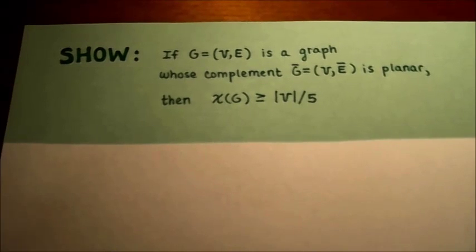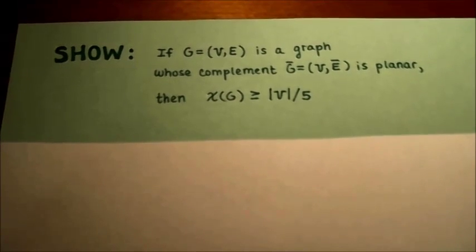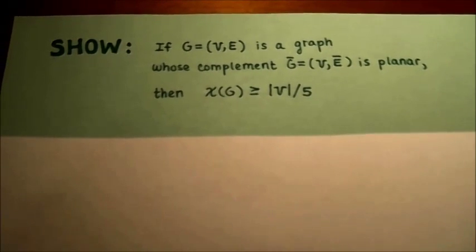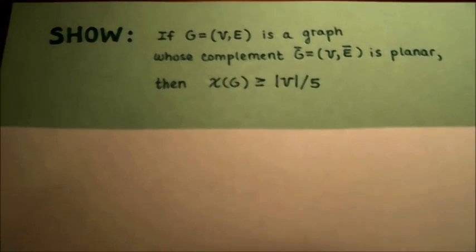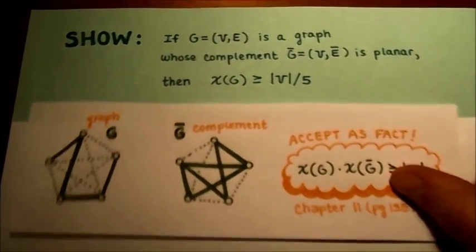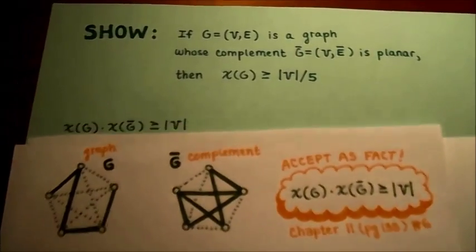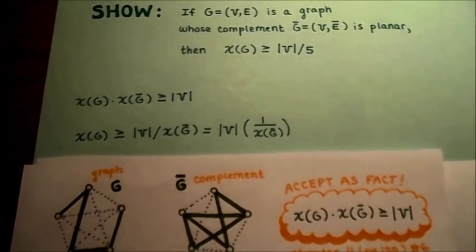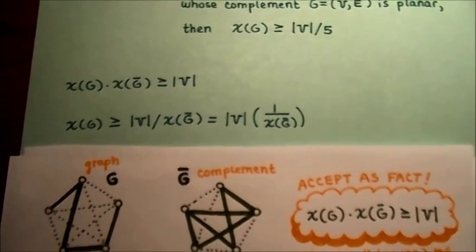Now we would like to show one more result using our same graphs G and G complement. If G is any graph whose complement is planar — meaning it can be drawn on a flat surface without any edges overlapping — then the minimum coloring for G is greater than one-fifth of the total number of vertices. We can use the result from the last proof: χ(G) times χ(G complement) is greater than the number of vertices. Rearranging, χ(G) is greater than the number of vertices divided by χ(G complement).